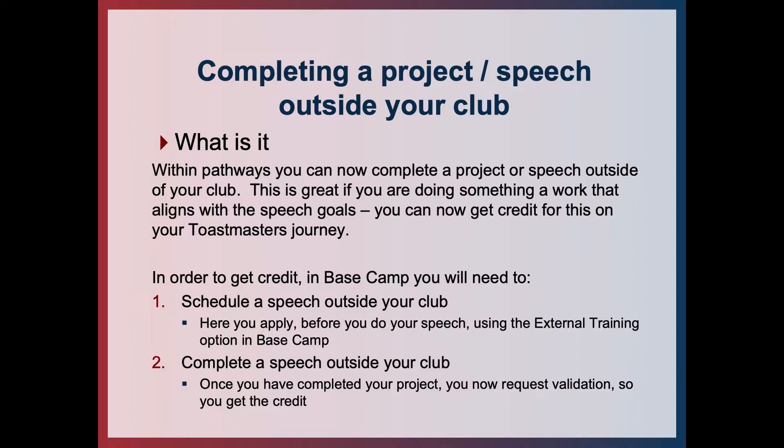In order to do this you need to complete two steps in Basecamp. First, you need to put in a request to schedule your speech outside your club. You apply before you do your speech using the external training in Basecamp and wait for your vice president education to approve it, to confirm that it's in line with those project goals and will be valid for credit. Then when you've done your speech you come back in, complete the project, and request validation so that you can get the credit.